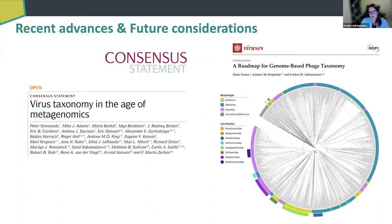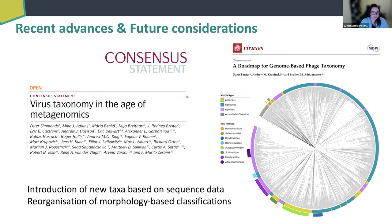Looking at this tree on a scale from zero to one as dissimilarity, if you have a branch length going all the way to the center, you have no similarity between those phages. If you have a myovirus on one side and a myovirus on the other, they share nothing in terms of predicted proteins. That's important for viromics — if you put them all into the same bin and they share nothing, why are they in the same bin? These two papers exemplify the road forward: introduction of new taxa based on sequence data alone, and reorganization of morphology-based classifications.